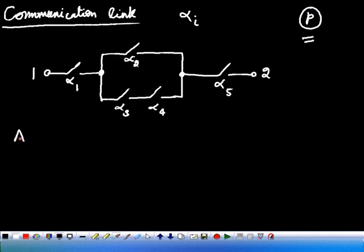Let AI be an event of closing a switch, closing alpha i. That is, A1 is closing alpha 1, A2 is closing alpha 2.